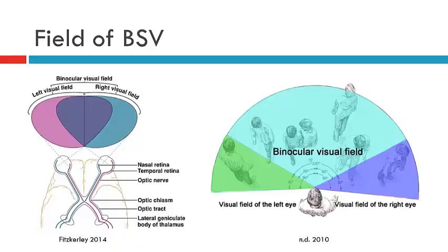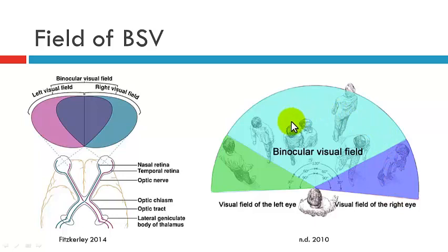The visual field consists of a monocular visual field and a binocular visual field. The monocular visual field is in the periphery — this is the monocular field of the left eye and this of the right eye — and here we have the binocular visual field.